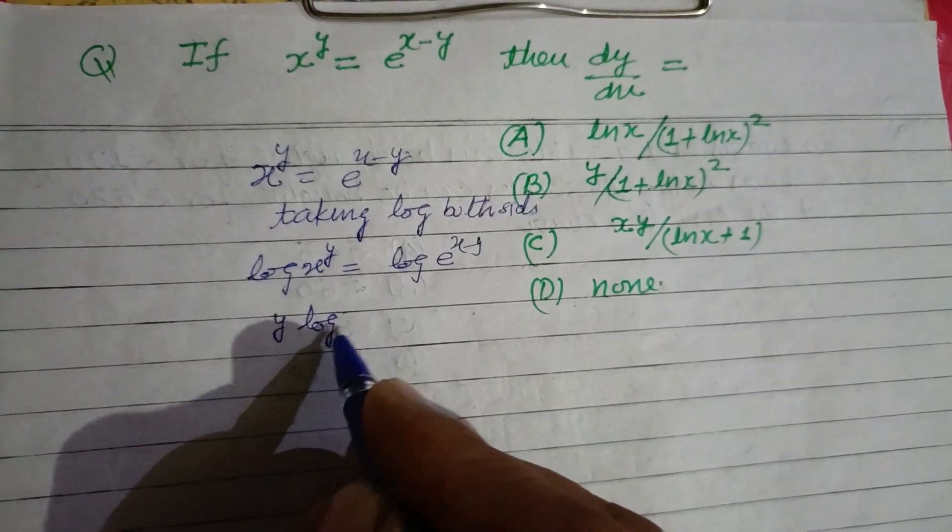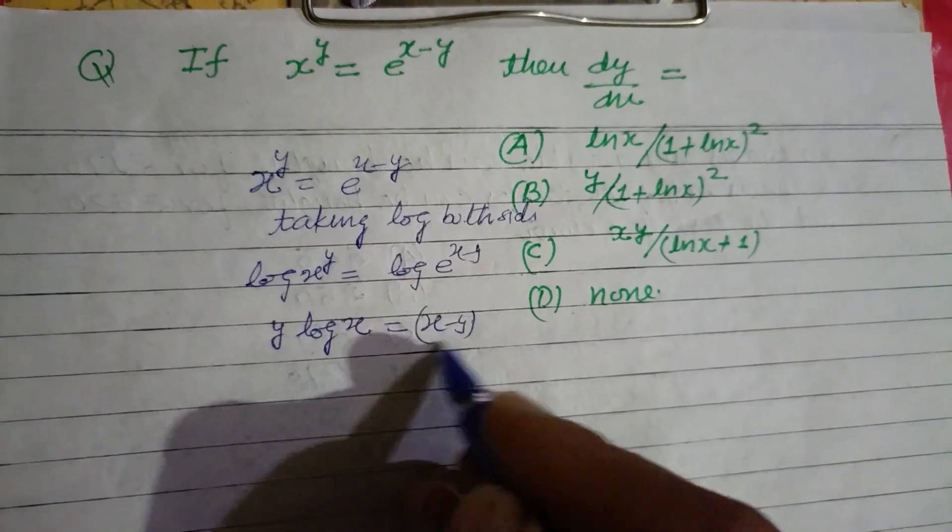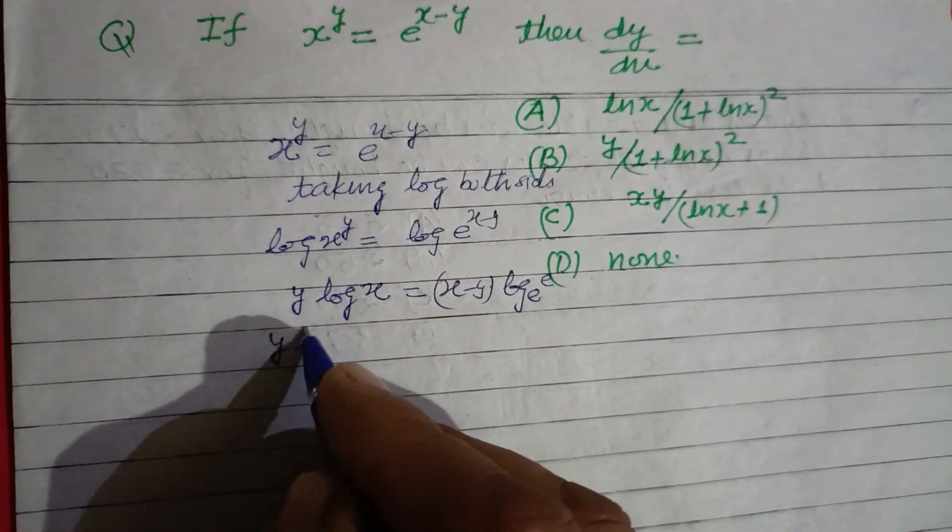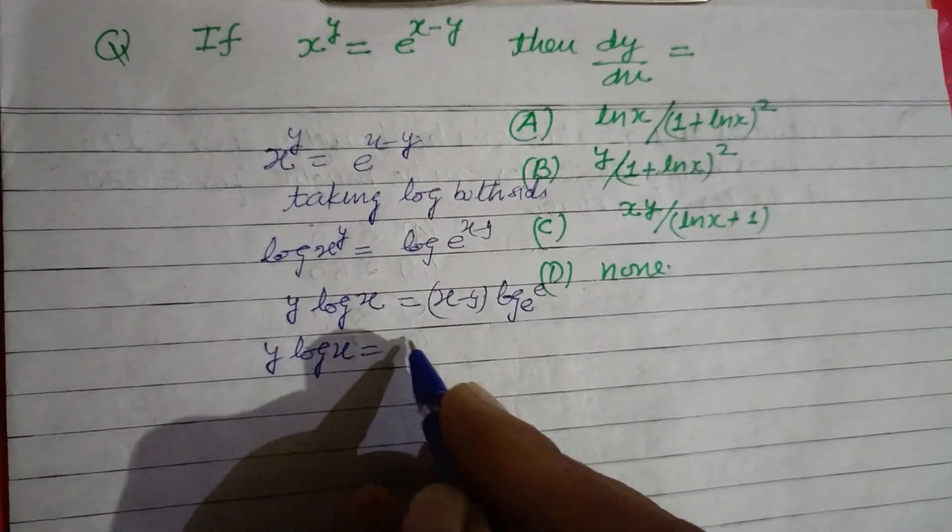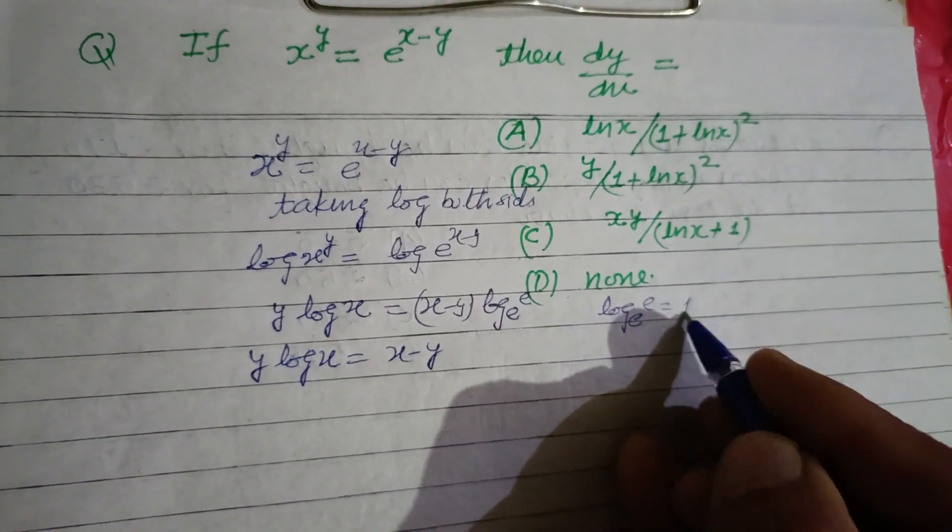So this will be log x power y equal to log e base x minus y. This will be y log x, and this will be x minus y log e base e. So y log x equal to x minus y. You know that log base e of e is 1.